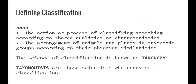Let's look at defining the term classification. Classification is the action or process of classifying something according to shared qualities or characteristics, and the arrangement of animals and plants in taxonomic groups according to their observed similarities. Therefore, the science of classification is known as taxonomy, and taxonomists are those scientists who carry out the science of classification.